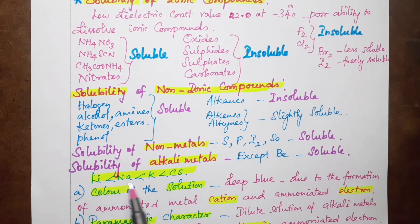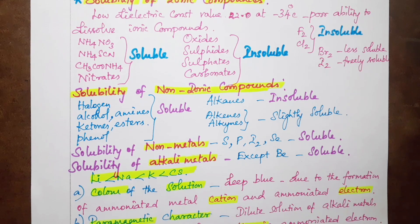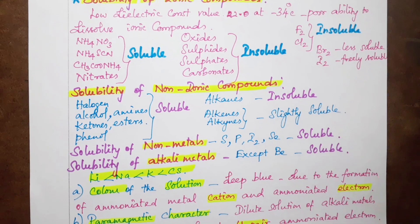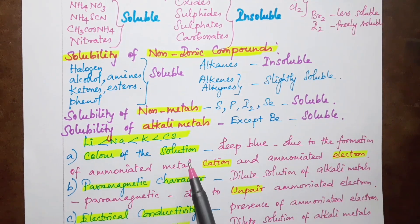Lithium, sodium, potassium, rubidium, and cesium are all soluble. When alkali metals are dissolved, we see the same characteristics. First, the color of the solution is maximum deep blue color.